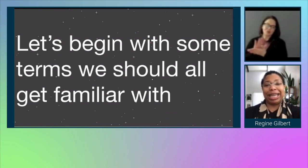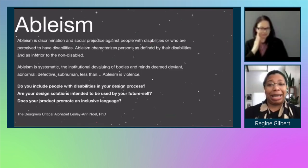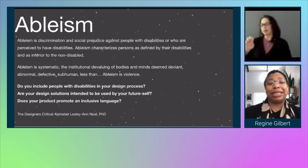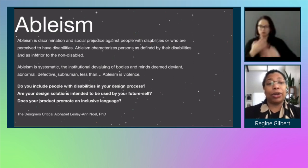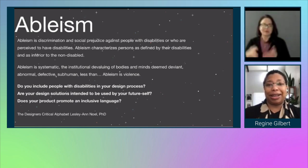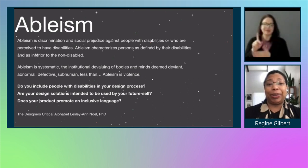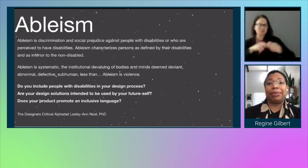So let's begin with some terms we should all get familiar with. Ableism. Ableism is discrimination and social prejudice against people with disabilities or who are perceived to have disabilities. Ableism characterizes persons as defined by their disabilities and as inferior to the non-disabled. Ableism is systematic — the institutional devaluing of bodies and minds being deviant, abnormal, defective, subhuman, less than. Ableism is violence.